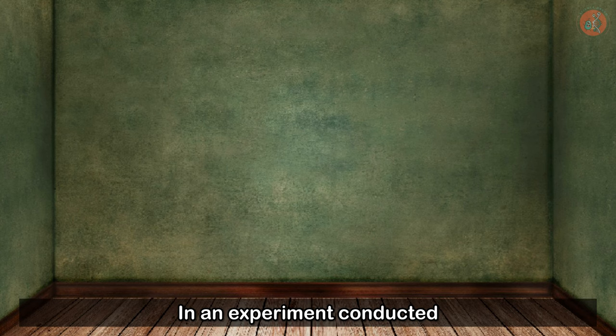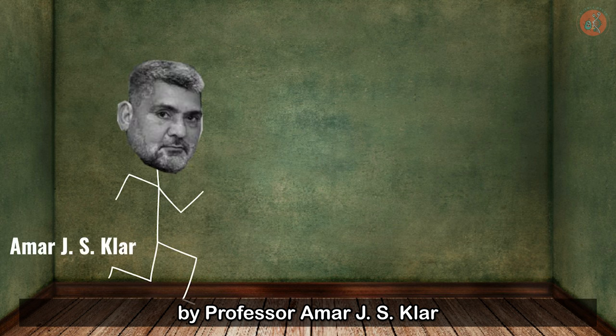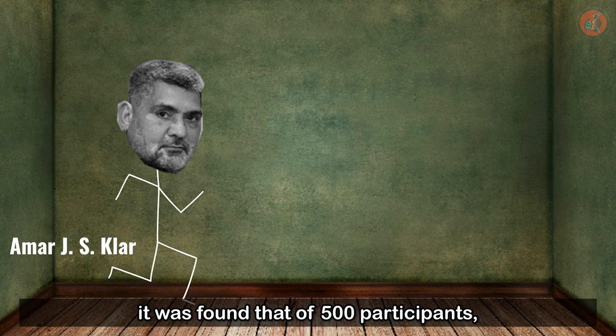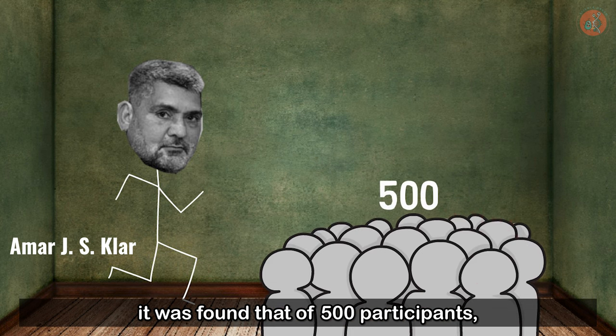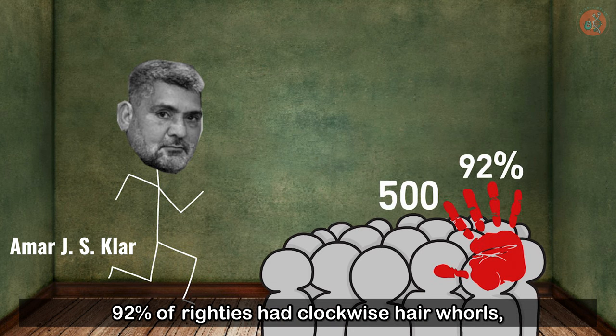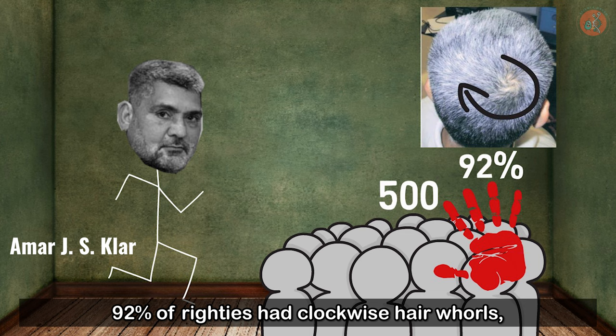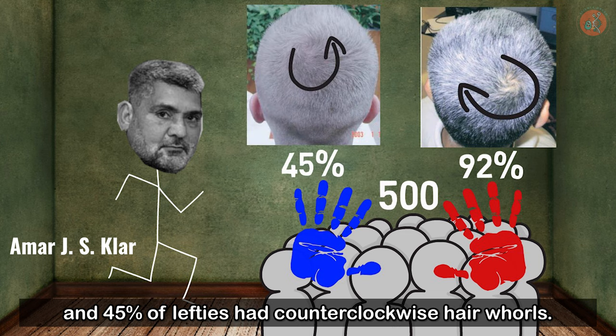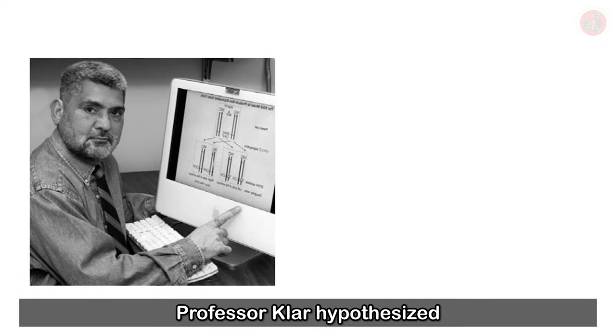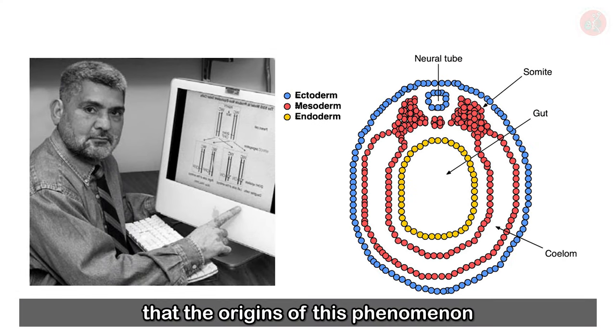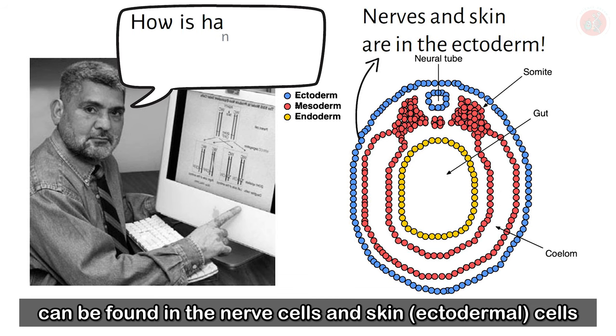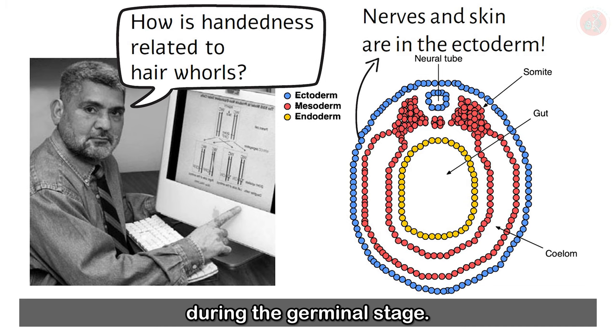In an experiment conducted by Professor Amar J. S. Klar of the American National Cancer Institute, it was found that of 500 participants, 92% of righties had clockwise hair whirls, and 45% of lefties had counterclockwise hair whirls. Professor Klar hypothesized that the origins of this phenomenon can be found in the nerve cells and skin ectodermal cells during the germinal stage.